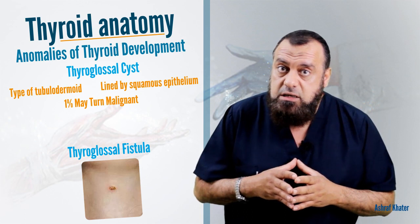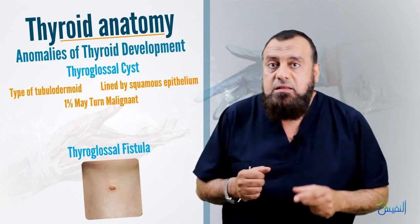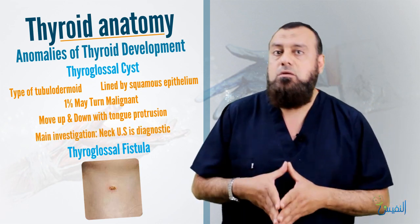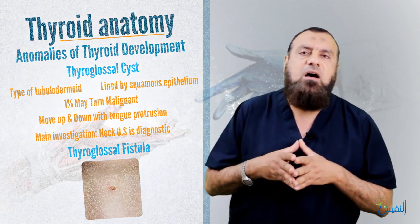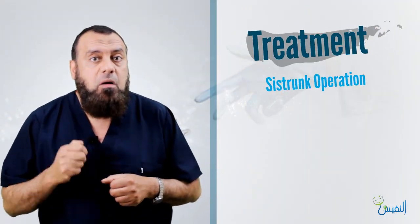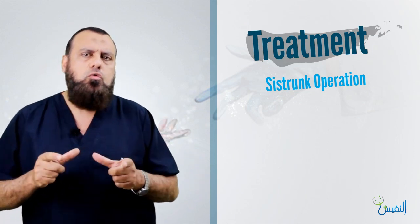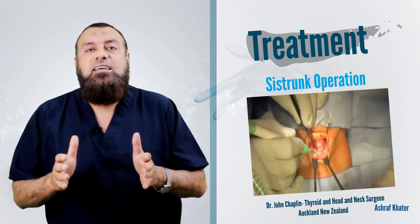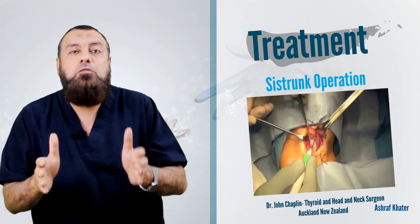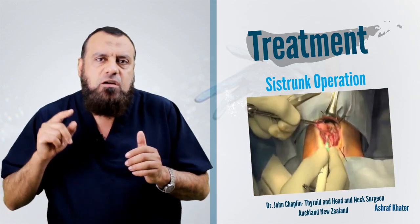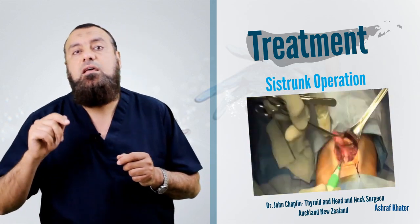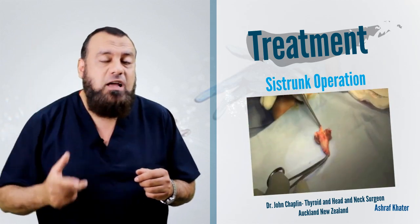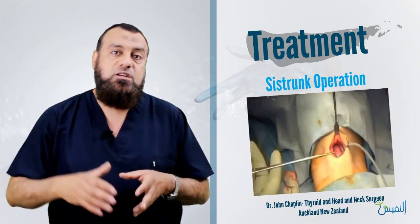The thyroglossal cyst is characterized by movement up and down with tongue protrusion. Diagnosis depends on ultrasound, which will reveal its cystic nature. Treatment is by the Sistrunk operation, which involves excision of the whole cyst together with the tract. To remove the tract, we must remove the central part of the hyoid bone, which is traversed by the tract, and follow it up to the foramen cecum. Without removing the entire tract and central hyoid, recurrence will occur.